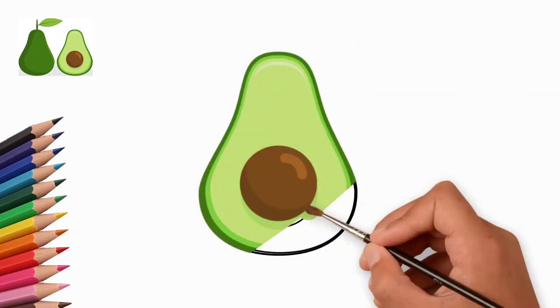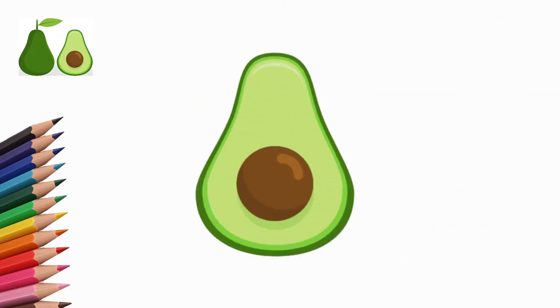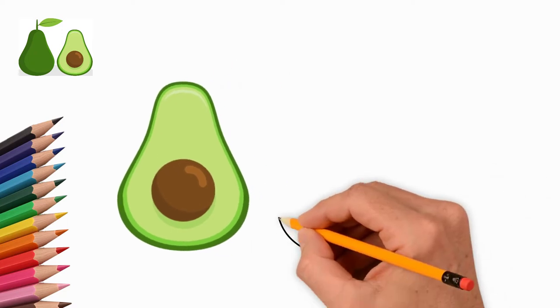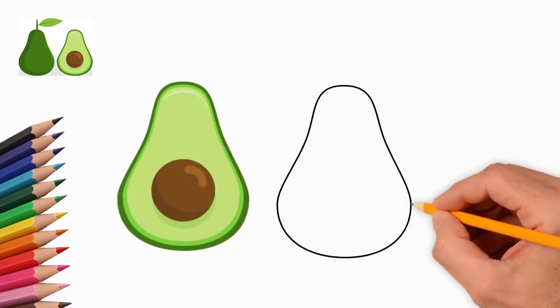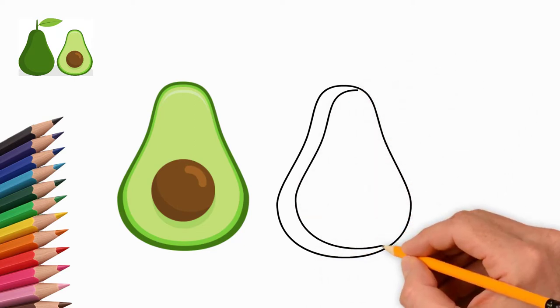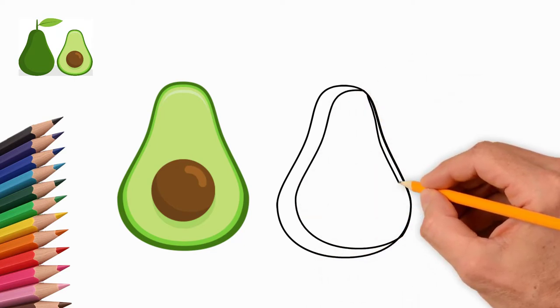Our avocado is cut in half. We draw an avocado in section. Let's paint our avocado. We use green, yellow and brown colors.